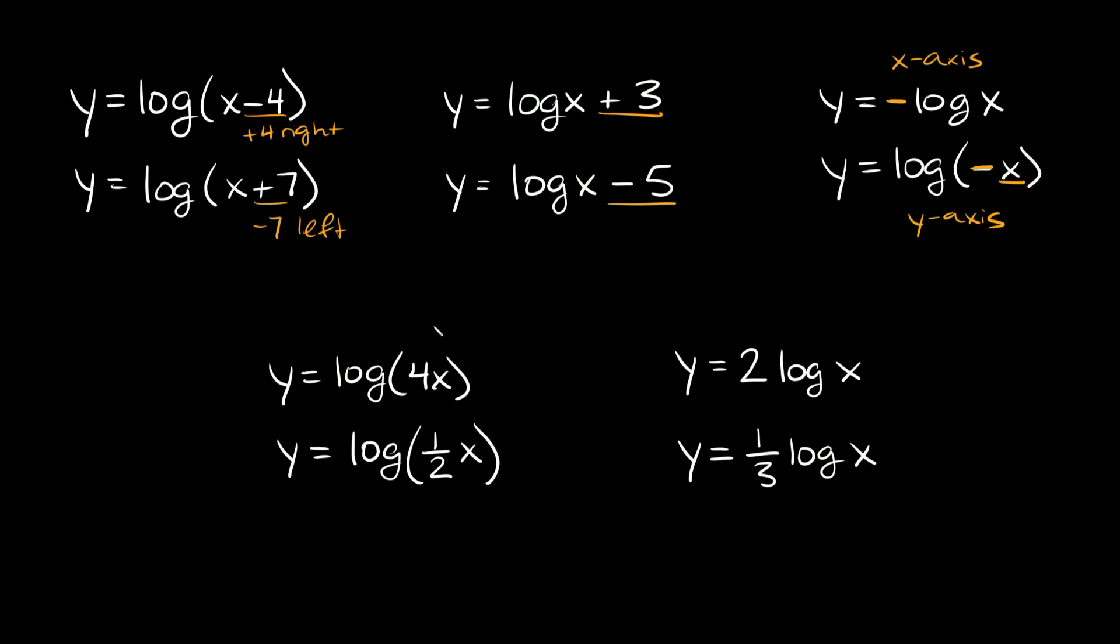And lastly, horizontal and vertical stretching and shrinking. Here we have y equals log of 4x. You can see we have a number attached to the x - we're multiplying x by a number. This indicates a horizontal stretch or shrink. If this number is bigger than 1, that would be a shrink. It's kind of counterintuitive. So here, this is a horizontal shrink.